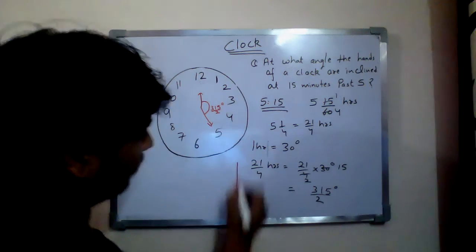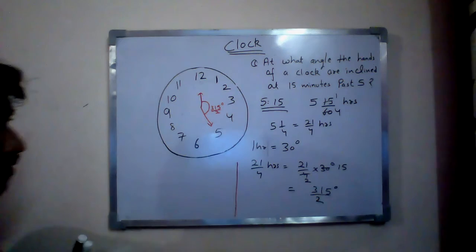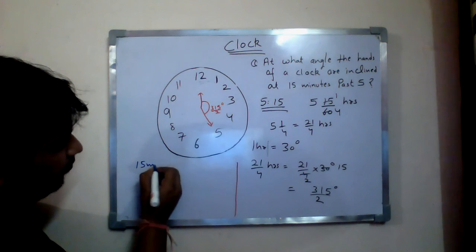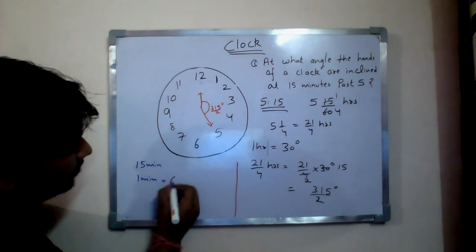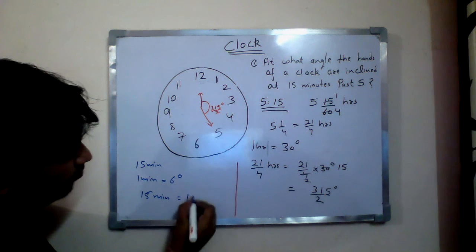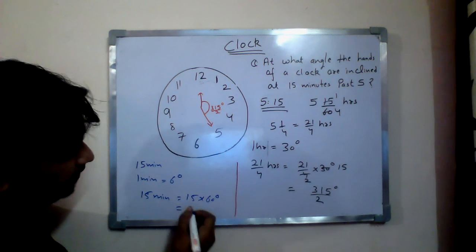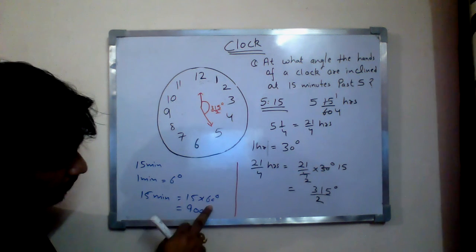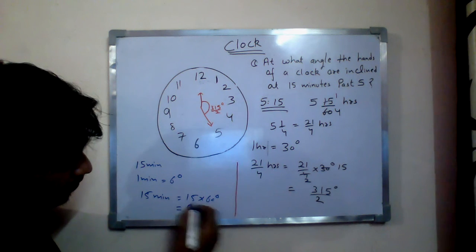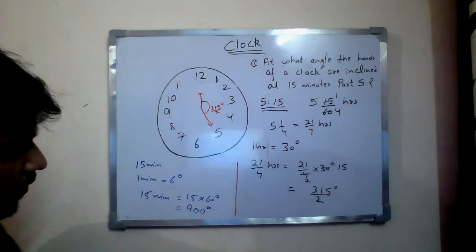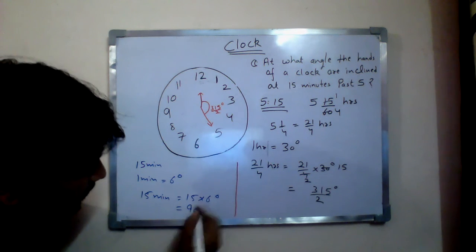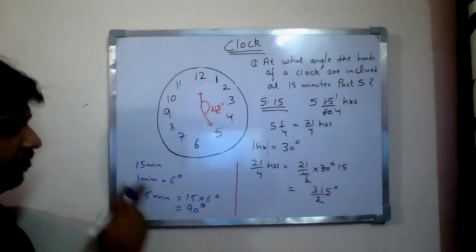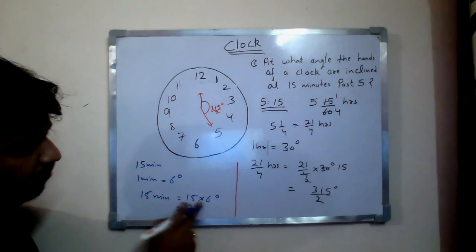Now we have to find the angle travelled by the minute hand. In 15 minutes — we know that in 1 minute the minute hand travels 6 degrees — so in 15 minutes it will travel 15 multiplied by 6, which is 90 degrees.